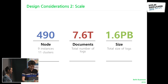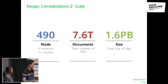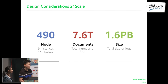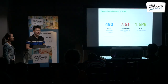This is the current scale of our Elasticsearch deployment. We have 490 nodes and 11 clusters across nine instances. The total number of logs is 7.6 terabytes and the total size is currently 1.6 petabytes. At the beginning of our product we started with training data on Elasticsearch and had about half a billion logs, but our product keeps growing so we need to consider scalability.